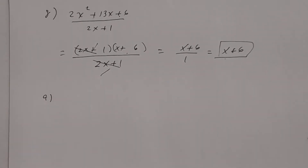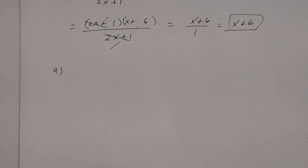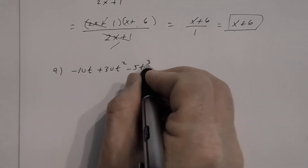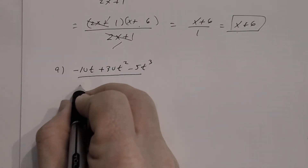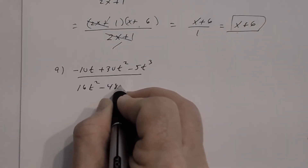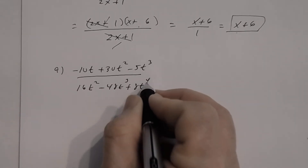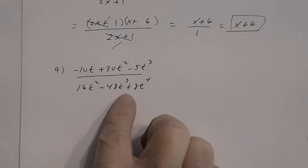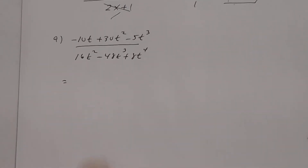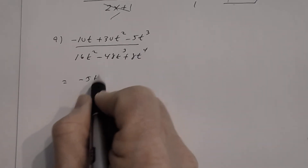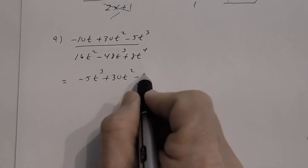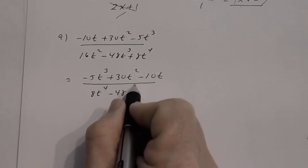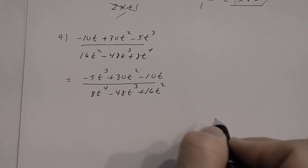Number nine: (−10t + 30t² − 5t³) divided by (16t² − 48t³ + 8t⁴). First, put both in descending order: numerator becomes −5t³ + 30t² − 10t; denominator becomes 8t⁴ − 48t³ + 16t².